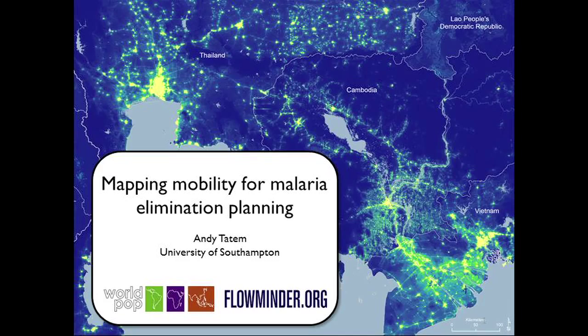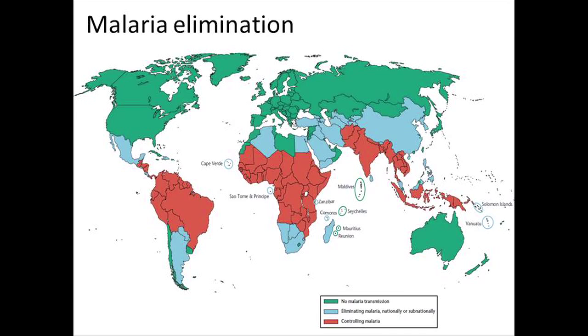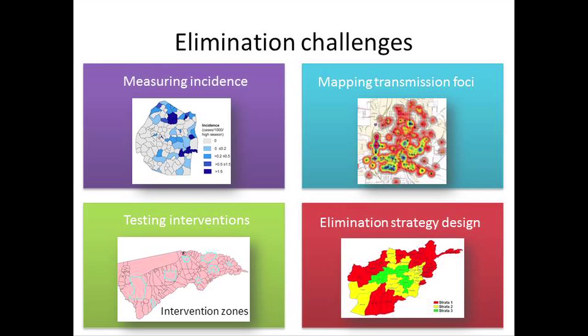We're going to talk about our work focusing on population mobility, and I think it follows on quite nicely from the previous talk, providing some extra tools to support malaria elimination planning. These are the countries in light blue that have a national policy for eliminating malaria, and some of those Mekong region countries could probably be colored blue as well nowadays.